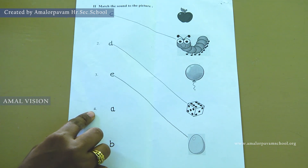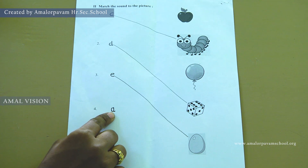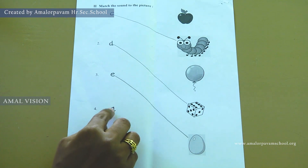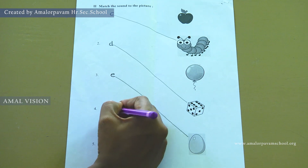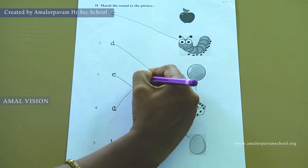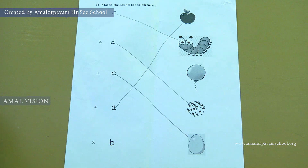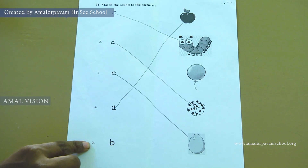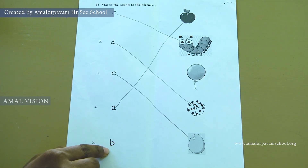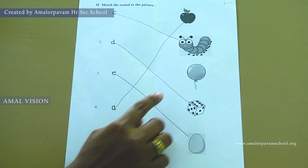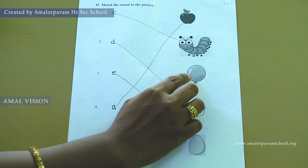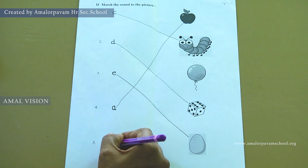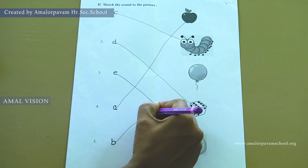Keep finger in four. What sound is this? A — apple. Take a pencil, match the sound A to the picture apple. Now keep finger in five. What sound is this? B — balloon. Take a pencil, match B to the balloon.